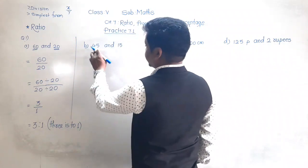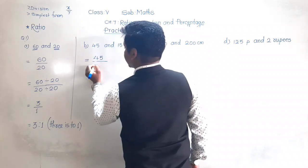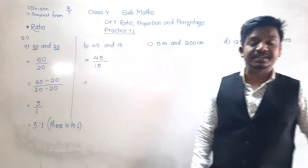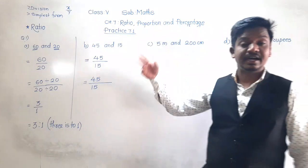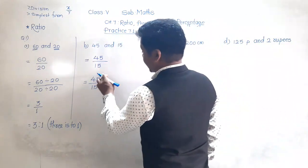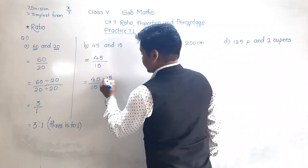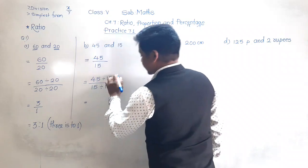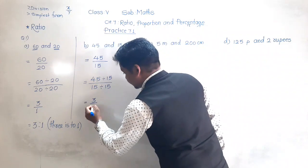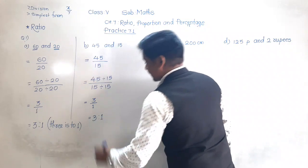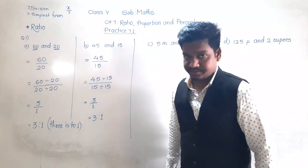Next: 45 and 15. Find the ratio of 45 and 15, that means 45 upon 15. HCF of 45 and 15 is 15. 15 threes are 45 and 15 ones are 15. So 45 divided by 15 is 3 and 15 divided by 15 is 1. Ratio is 3 is to 1. Remember, the numerator you write first and the denominator at the end.